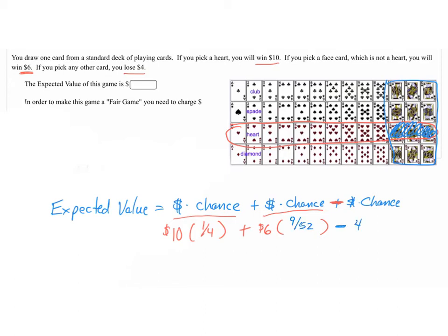Then minus your $4 times the chance of that happening. Whatever I haven't circled is what your chance of that is. You're going to have to figure that out on your own. And once you put that all in your calculator, you'll have your answer for the expected value.